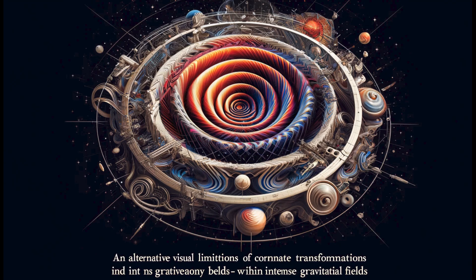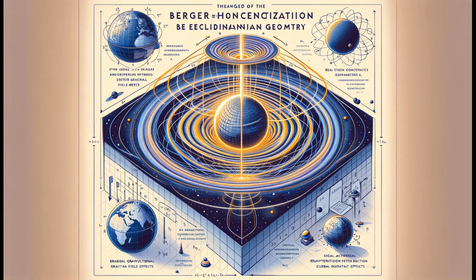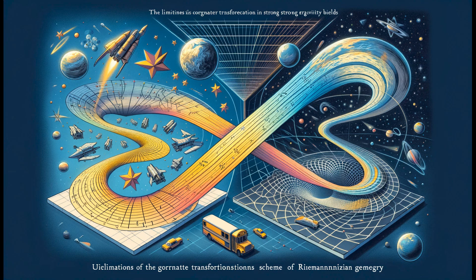Within Riemannian geometry, a broader conceptualization of spacetime is introduced. The recognition that real gravitational field effects cannot be Euclideanized necessitates the use of a more general metric. This general metric can locally approximate Euclidean geometry but must also accommodate the global spacetime curvature caused by gravitational effects, articulated within a four-dimensional Riemannian space where the metric tensor replaces the flat spacetime metric of special relativity.